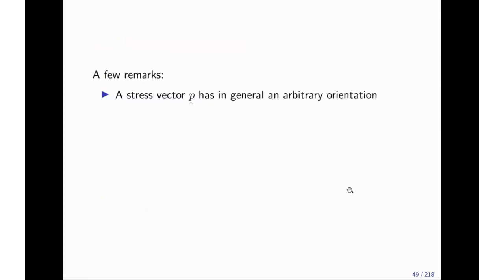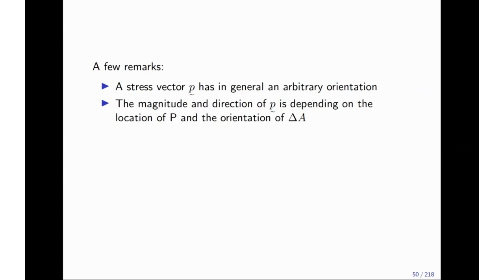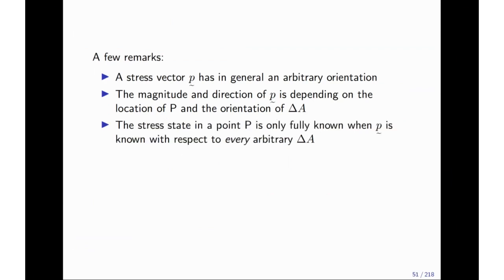Some remarks and summary. A stress vector P has in general an arbitrary orientation. The magnitude and direction of P is depending on the location of the point and the orientation of the area. The stress state in a point is only fully known when P is known with respect to not only this one area, but every arbitrary area. And in three dimensions, that means we need to have three independent cuts in order to get all this information, at least three independent cuts.